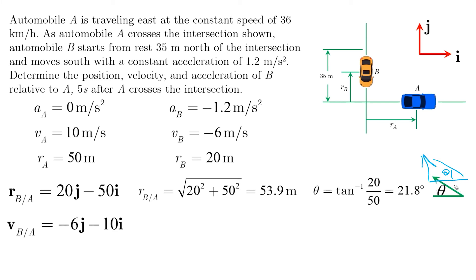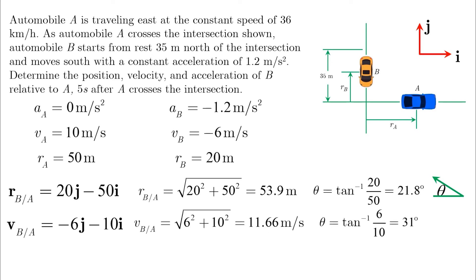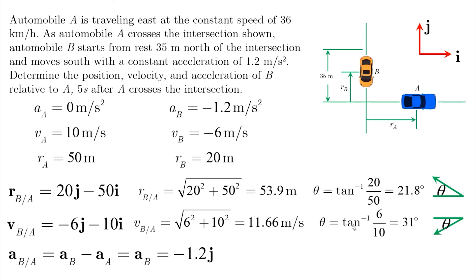For VB relative to A, we have the velocity of B in the negative J direction minus the velocity of A in the positive I direction. Taking the magnitude, the direction is negative I with negative J, which gives us the corresponding angle. Finally, for the acceleration of B relative to A — since AA equals zero — AB relative to A equals AB, which is minus 1.2 J, or 1.2 meters per second squared in the downward direction.